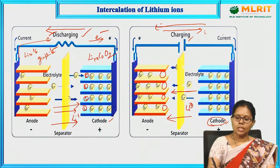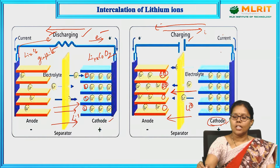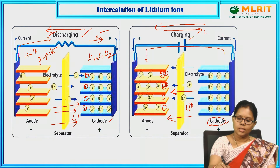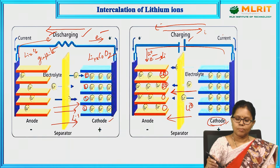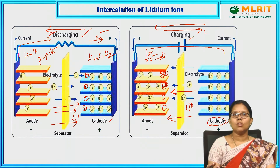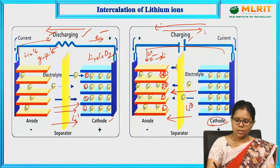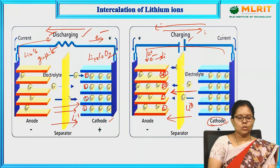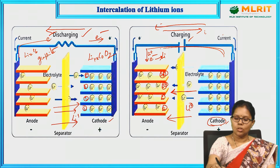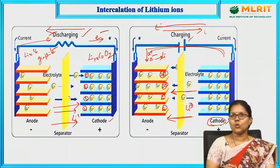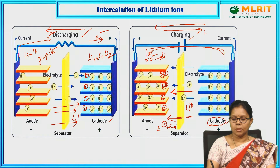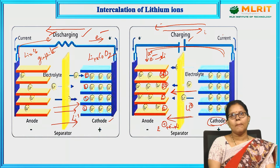Lithium ions move through the electrolyte and electrons arrive externally. Lithium ions gain those electrons and get converted to lithium atoms. Electrons move from cathode to anode externally, and ions also move from cathode to anode through the electrolyte, where lithium ions are reduced to lithium atoms that settle in the lattice structure sites. This is all about the mechanism.